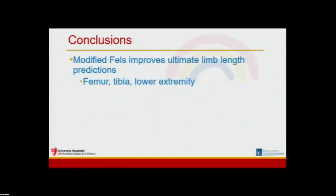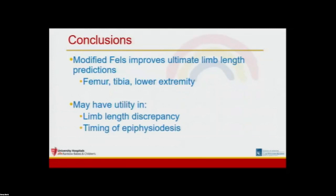In conclusion, the modified Fells knee skeletal maturity system improves predictions of femoral length, tibial length, and lower extremity length, and it may have utility in estimation of ultimate limb length discrepancy and timing of epiphysiodesis.